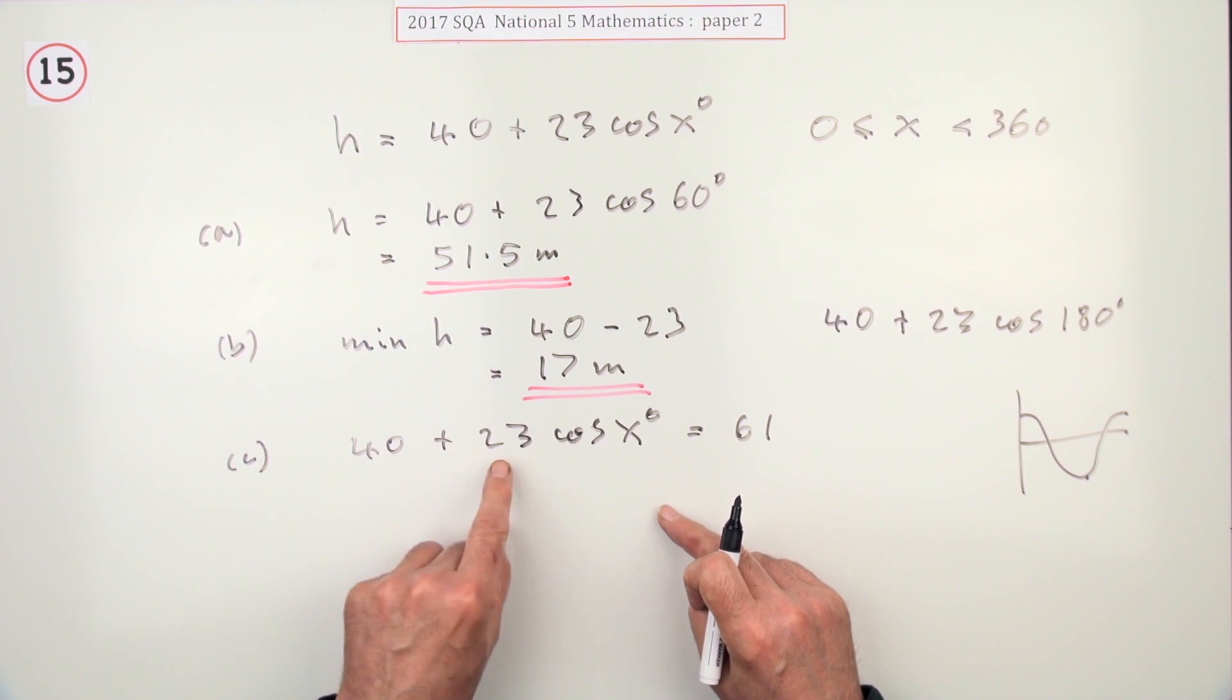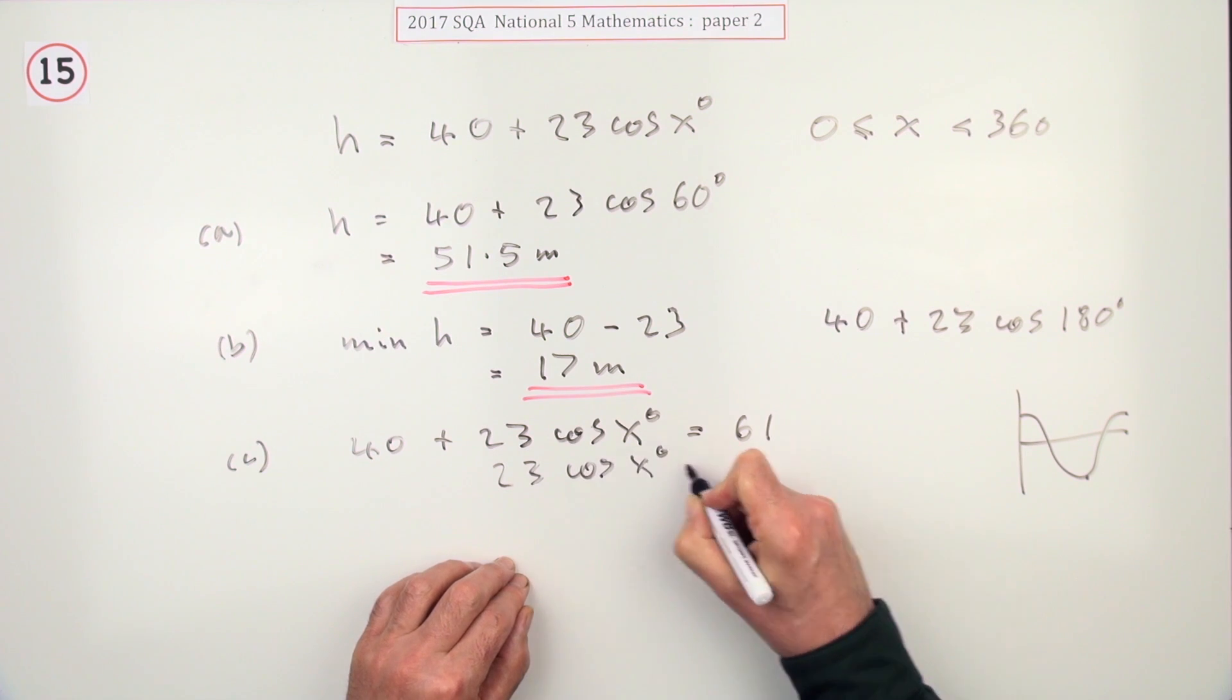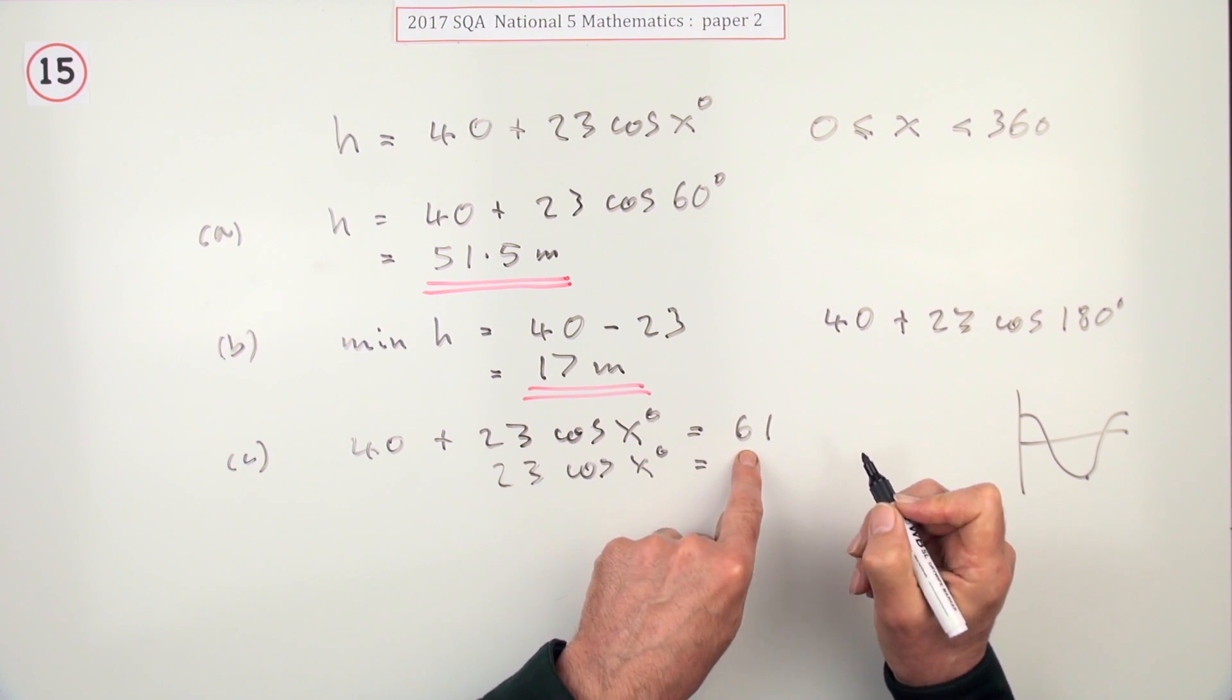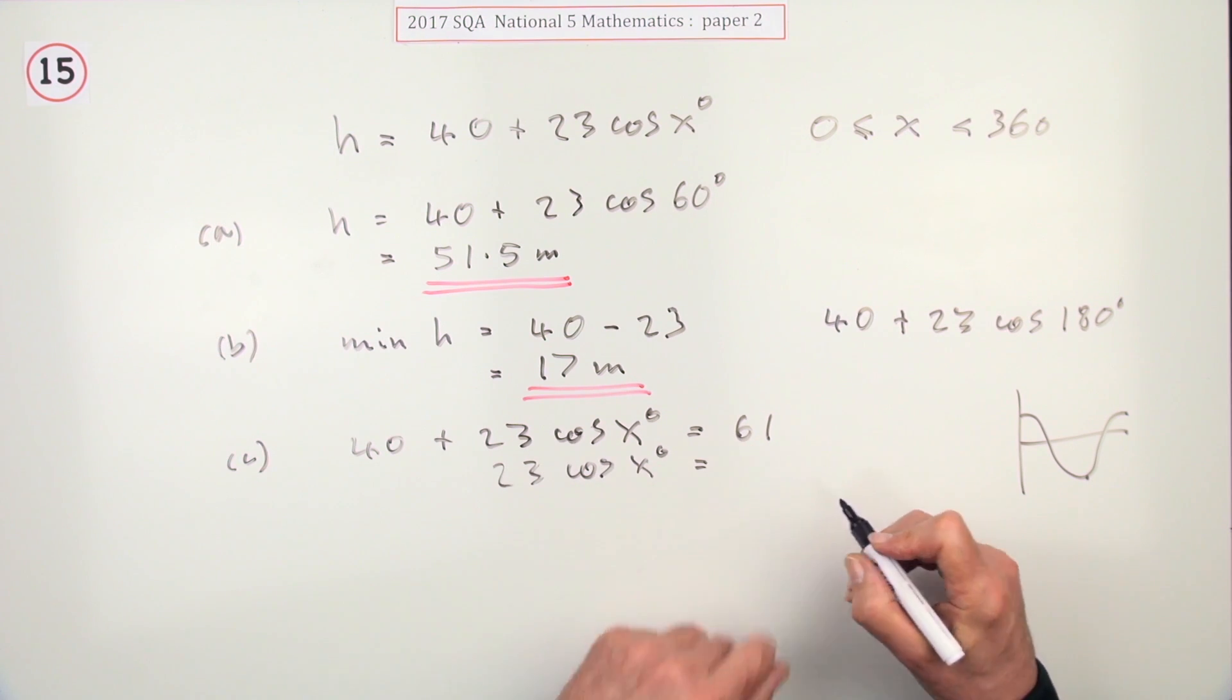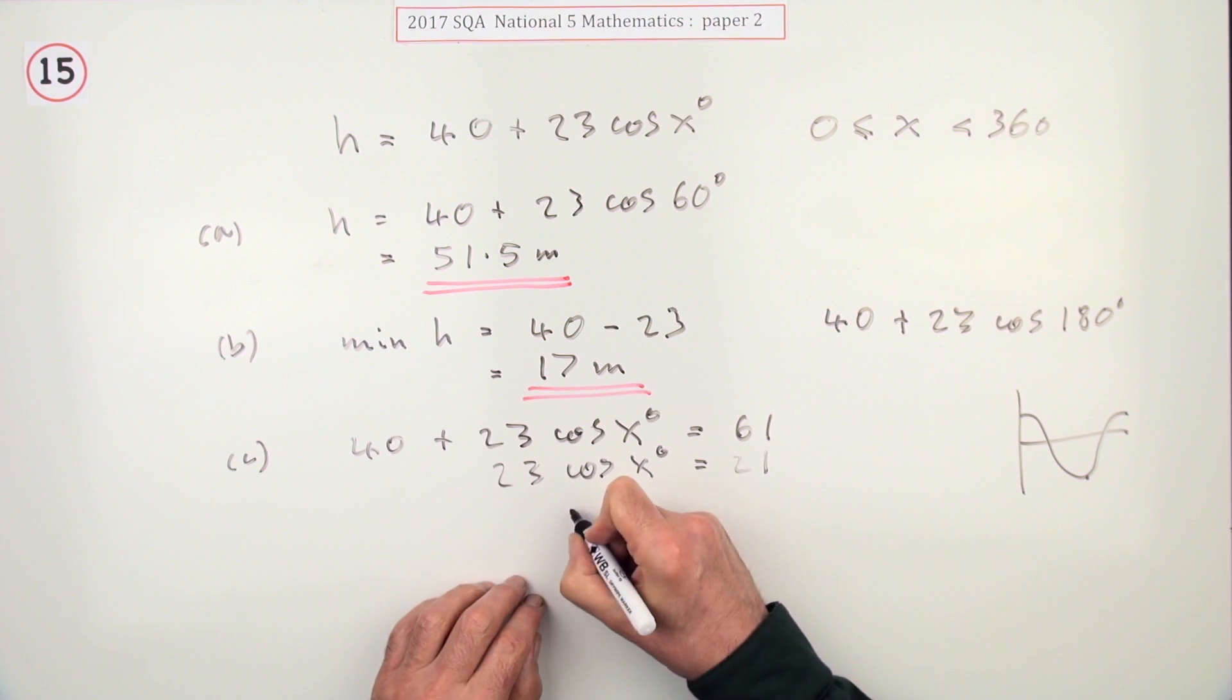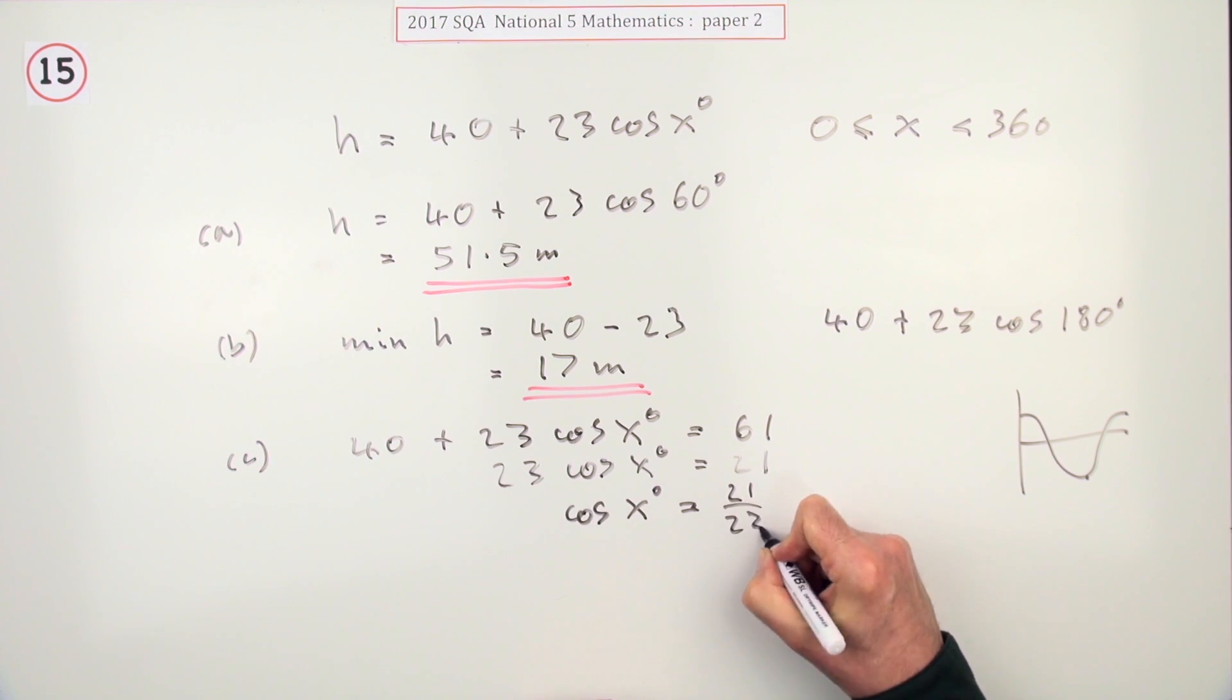So to get to x, I've got to get out of the 40, the 23, and the cos. Well, 40 first - 23 cos x will be 40 away from that. Instead of showing that, I'll just actually take it away. 40 away from that is 21. Now to get down to this, divide by 23, so that's 21 over 23. And finally to get x, do inverse cos. Inverse cos of 21 over 23.